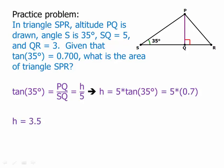Well, 5 times 0.7 is 3.5. So H equals 3.5. Very useful.